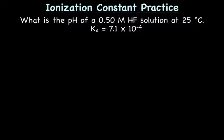Okay, let's try our newfound skills doing an ionization constant practice problem. So the question is: what is the pH of a 0.50 M HF solution at 25°C? And in this case, Ka equals 7.1 times 10 to the negative 4. Alright, so the first thing we need to do is write the ionization reaction.